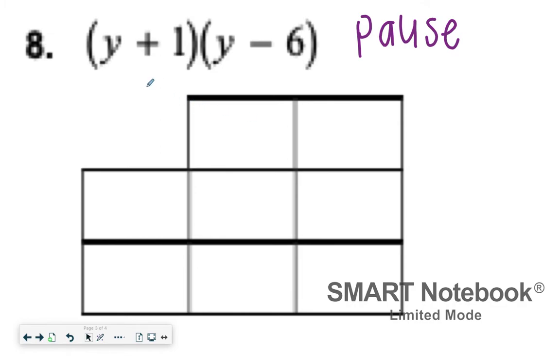All right, so by now you've gotten a chance to try number eight. What I'm going to do first is put this first set of parentheses, Y plus one, into that first line of boxes. And because you're multiplying, it really doesn't matter which one goes where, just as long as each individual term gets their own box. And then Y and minus six will go up here. And then you start multiplying.